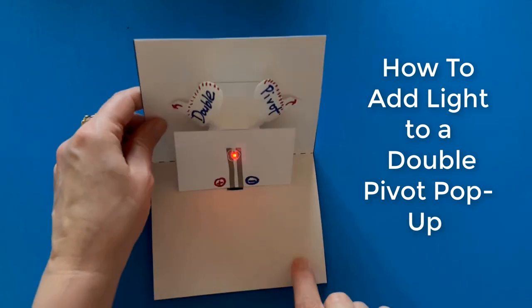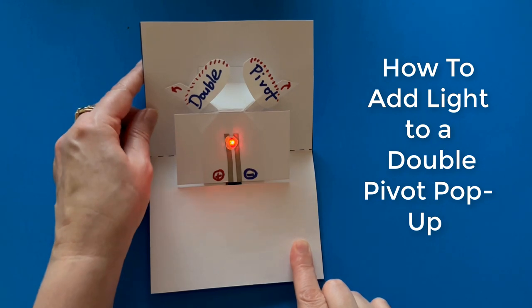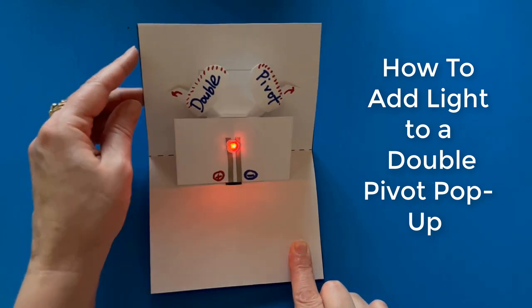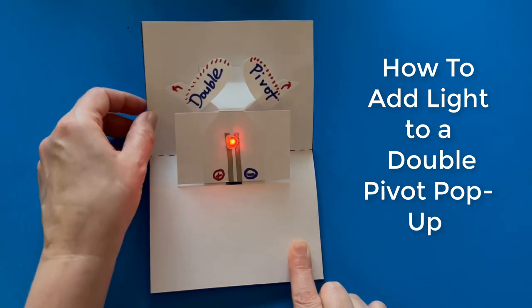The only thing better than a paper circuit is a paper circuit that pops up. In this video, I'll show you how to add light to a double pivot pop-up spread.